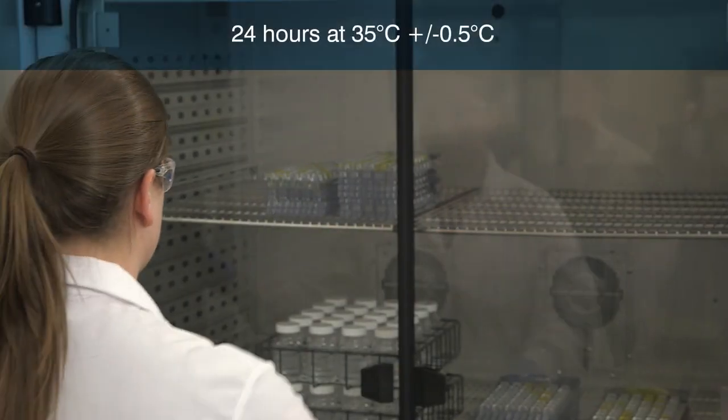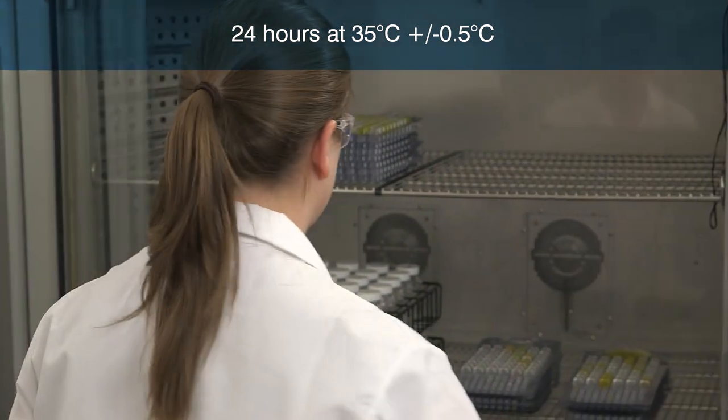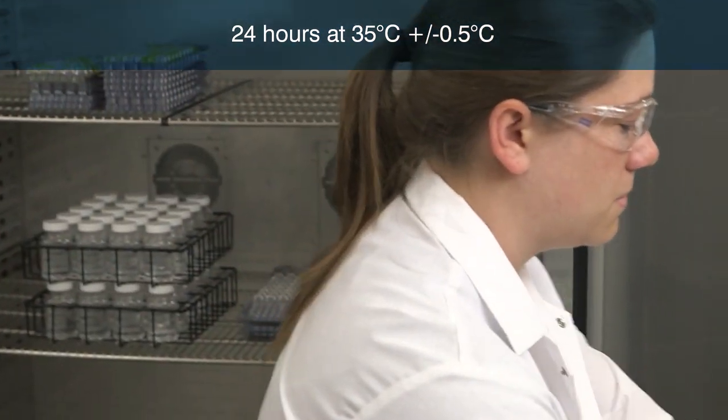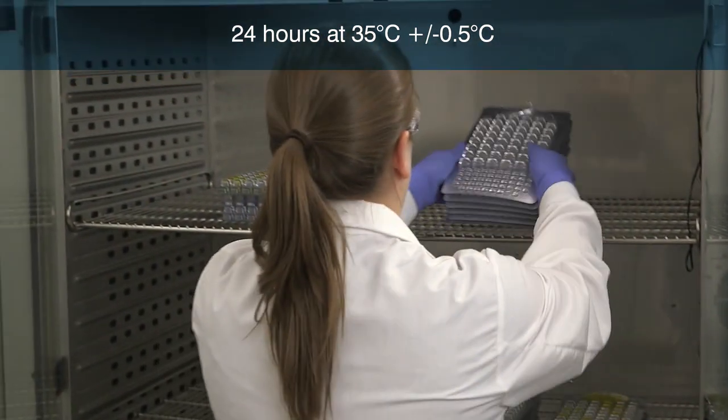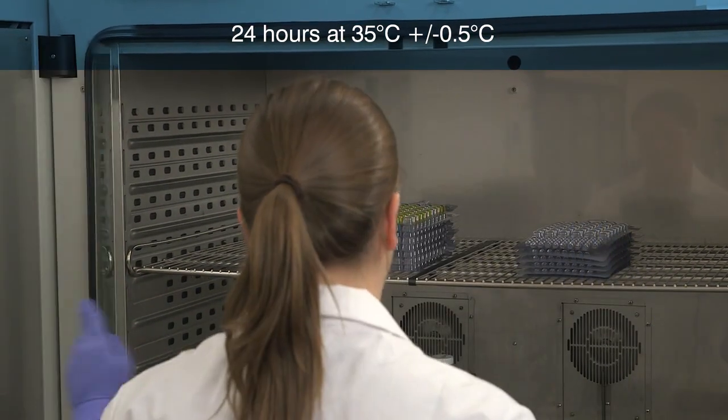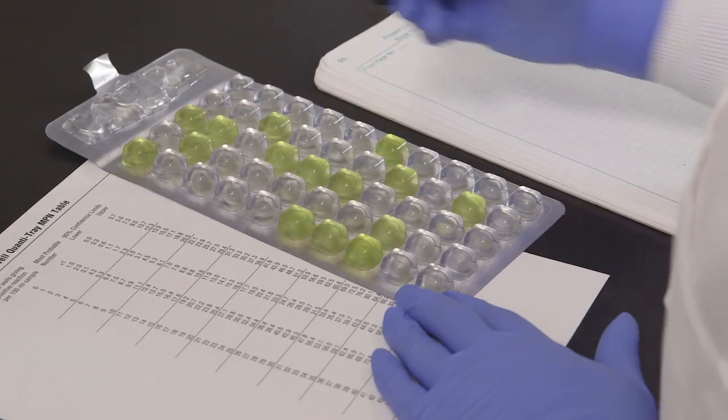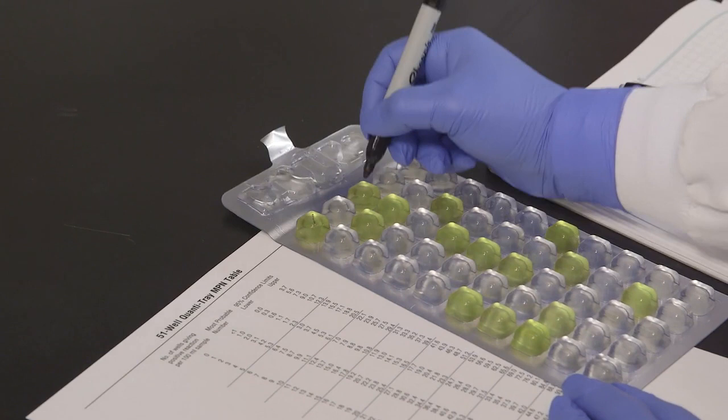Incubate the sealed tray for 24 hours at 35 degrees centigrade, plus or minus 0.5 degrees centigrade, or according to your local regulations. After incubation, mark each yellow well with a permanent marker, including the large overflow well.